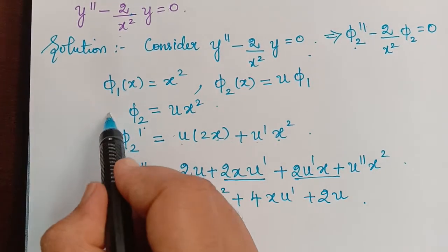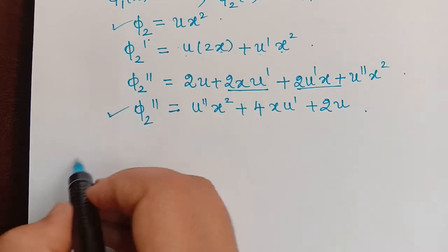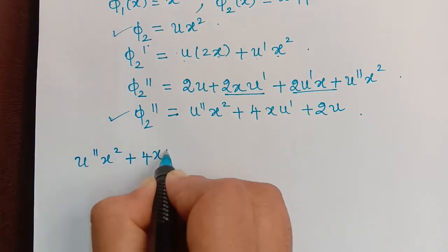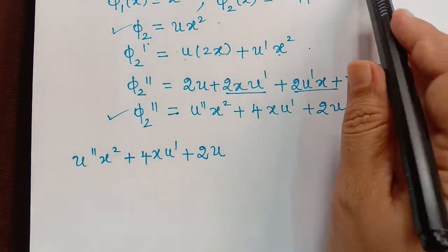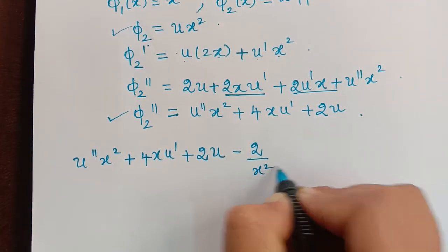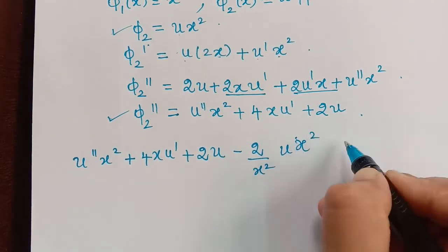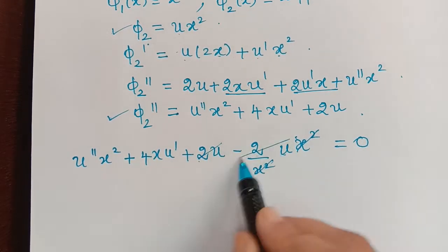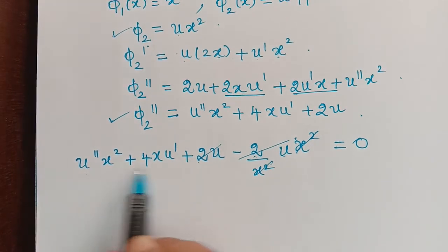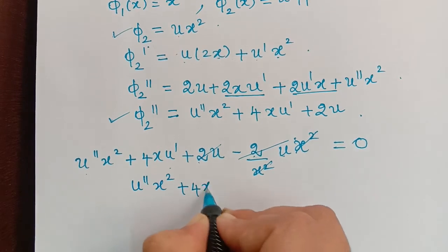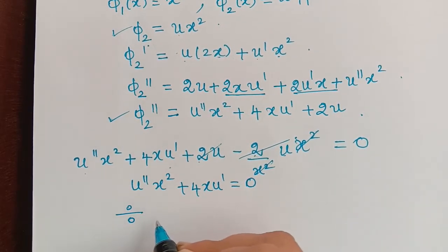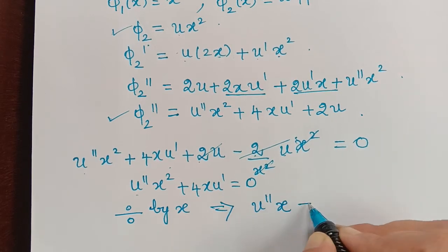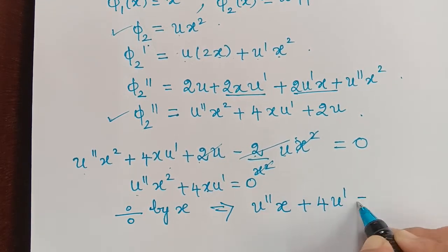Substituting φ₂'' and φ₂ into the homogeneous equation gives: u''x² + 4x·u' + 2u - (2/x²)·(ux²) = 0. The x² terms cancel and +2u and -2u cancel, leaving u''x² + 4x·u' = 0. Dividing throughout by x gives u''x + 4u' = 0.